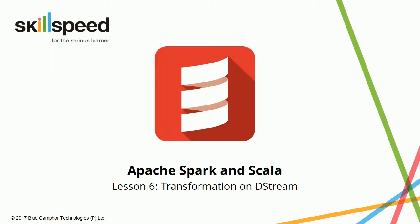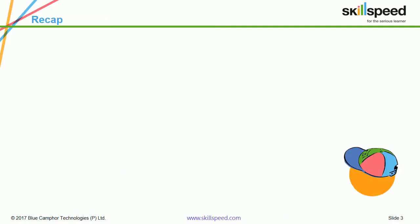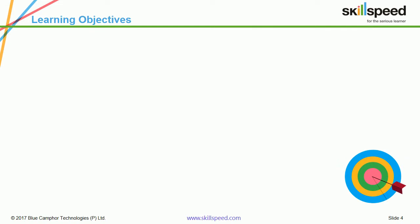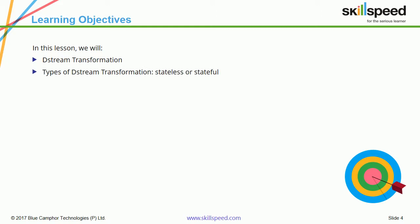Welcome to lesson 6, module 6 of the Apache Spark and Scala course. In this lesson we will be looking at transformations on the stream. As a quick recap, in the last lesson we learned about the types of input sources, receiver reliability and the different types of reliability. In this lesson we will cover D-Stream transformation, the two types — stateful and stateless — windowing operations, join operations, and how to save the output on a D-Stream.